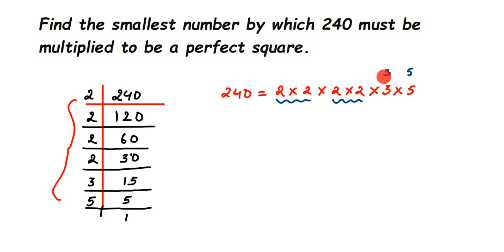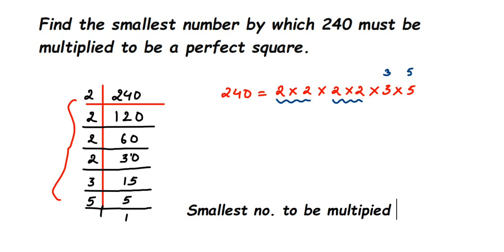Therefore, the least number — or the smallest number — to be multiplied is 15. Now let me multiply and show you. We multiply both sides, so it will be 240 multiplied by 15, which equals 3600.